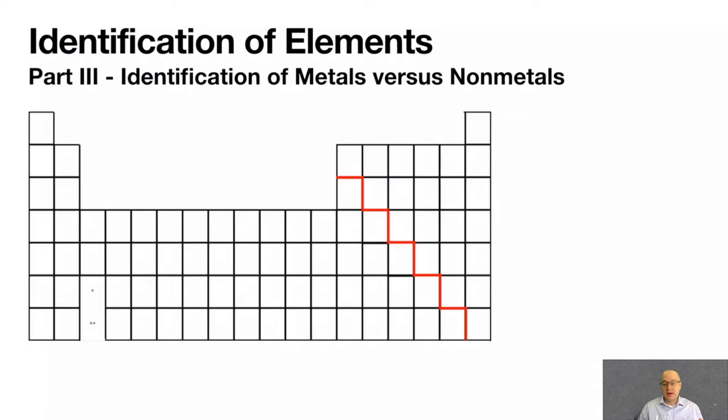The periodic table is broken down into three distinct classes of elements: metals, nonmetals, and metalloids.